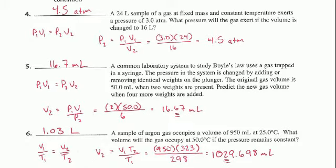Number five, a common laboratory system to study Boyle's Law uses gases trapped in a syringe. The pressure in the system is changed by adding or removing identical weights on the plunger, the part of the syringe that you actually push down.